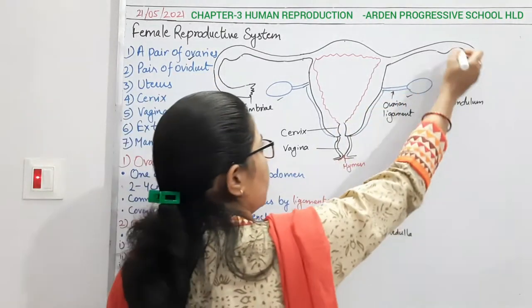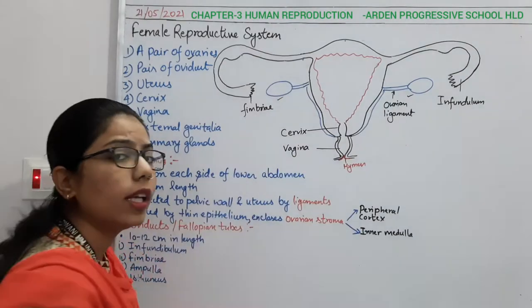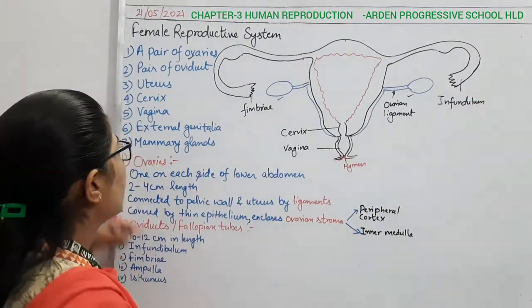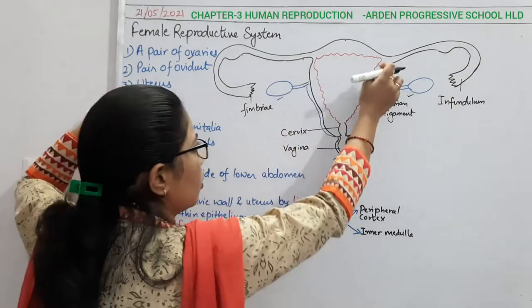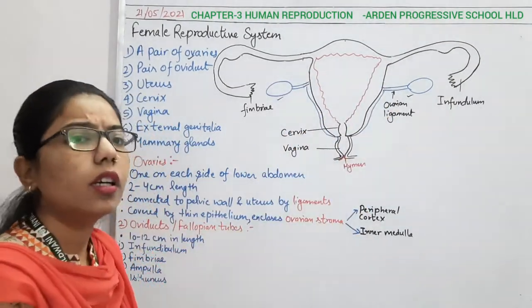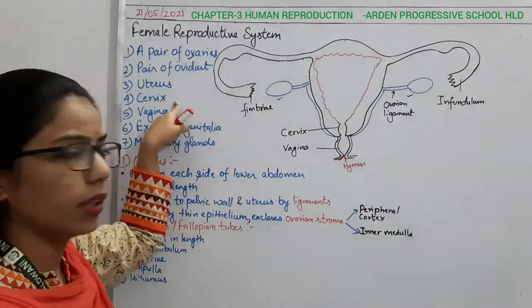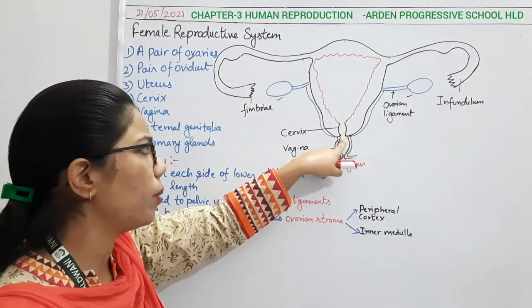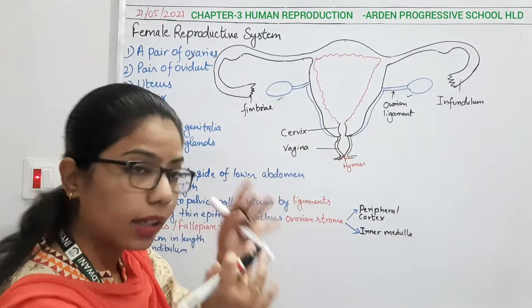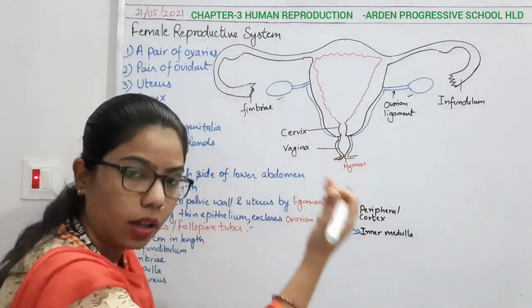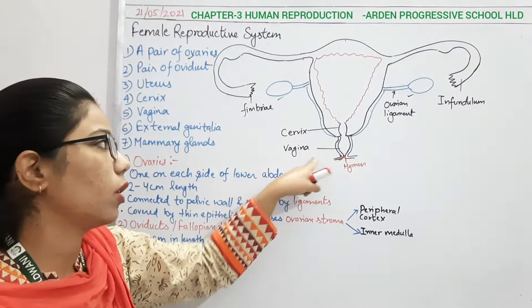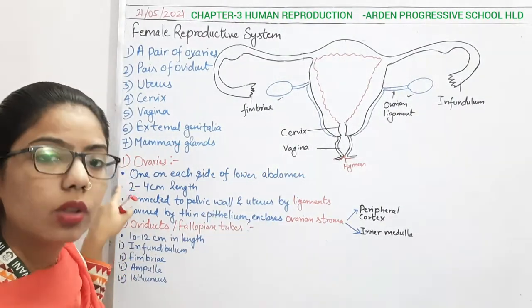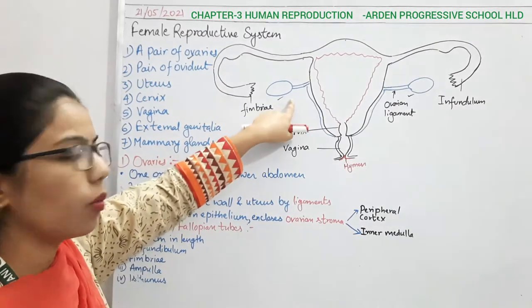These tube-like structures are the oviduct or fallopian tubes. With this triangular part — it is known as the uterus. The fourth one is the cervix, which is the opening. After that there is the anterior opening which we call the vagina. So one by one we will understand each part, starting with the ovaries.